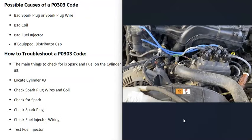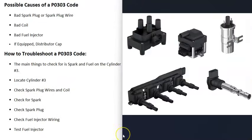The main thing you're going to want to check for is spark on the number three cylinder, and also that fuel is going to the number three cylinder. First, locate that number three cylinder on your particular vehicle. There are different types of coils — if you have a coil pack, you can check the spark plug wire going to the number three cylinder and be sure it looks good and is plugged in. Depending on the year and manufacturer, there are different types of coils, but they all provide high voltage to the spark plug so it can send out a spark when needed.